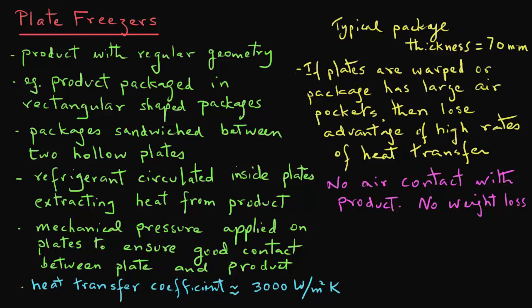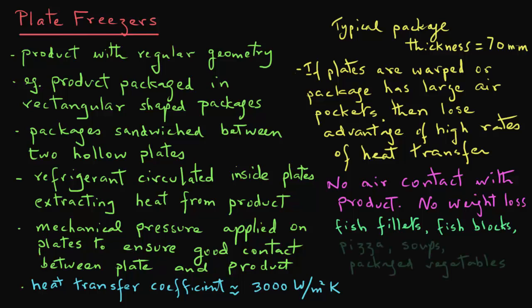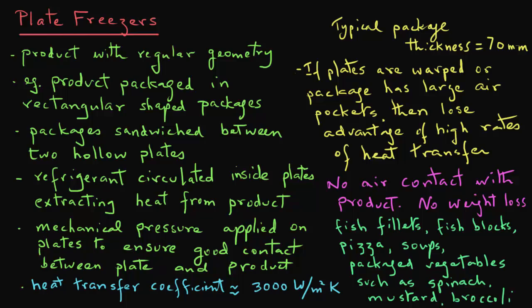One of the disadvantages of plate freezers is that it is a batch operation. You load the plate freezer, start the operation by bringing the plates into contact with the packages, and once the product is frozen, you remove those packages from the freezer. There have been attempts made to make this process semi-continuous by indexing packages that are loaded or unloaded. Typical products frozen using plate freezers include fish fillets, fish blocks, pizza, soups, and packaged vegetables such as spinach, mustard, and broccoli, typically found in rectangular shaped packages in a grocery store.